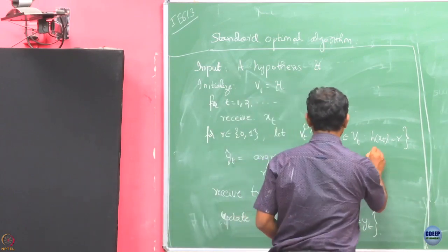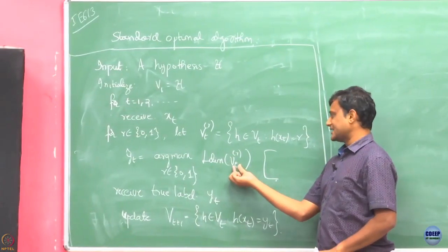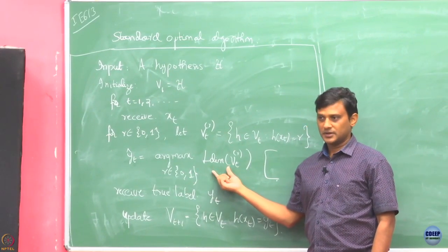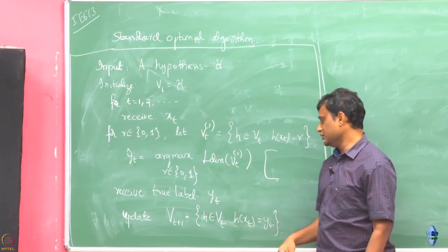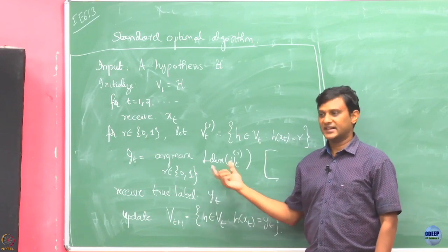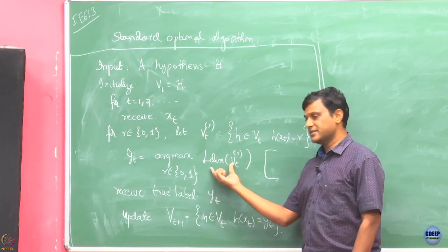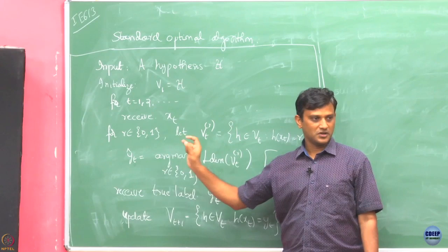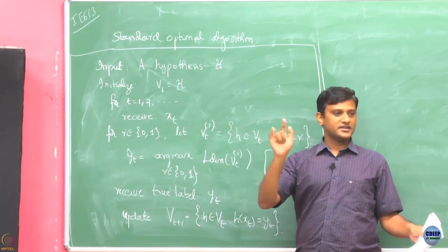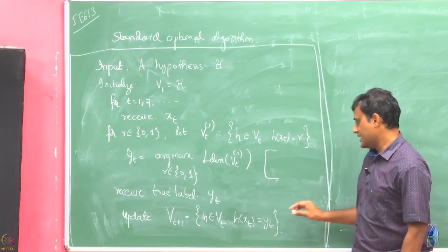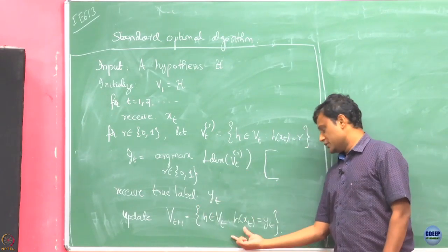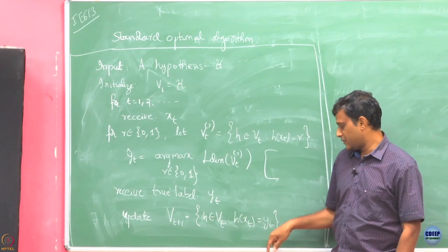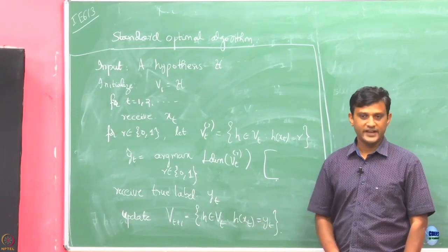It may happen that sometimes the two hypothesis classes end up with the same L-dimension, in which case you break the tie arbitrarily — either toss a coin or use your discretion. Then you receive Y_t and retain only those hypotheses making a correct prediction on the observed point x_t; the rest you throw away.